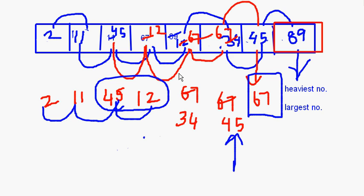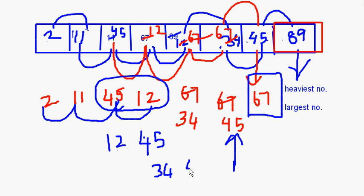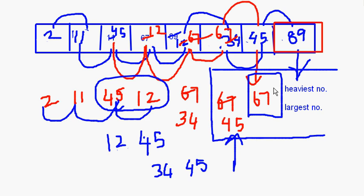There is a repetition in the array. Anyway, let us see: 2, 11, 11, 45, 45, 12 — when we come to 12, it comes here and 45 goes there. Then 45 and 34: 34 comes here, 45 goes there. Now 45 and 45 are compared — they are both equal, so nothing happens. So the three largest numbers — 45, 67, and 89 — have come to their sorted positions.